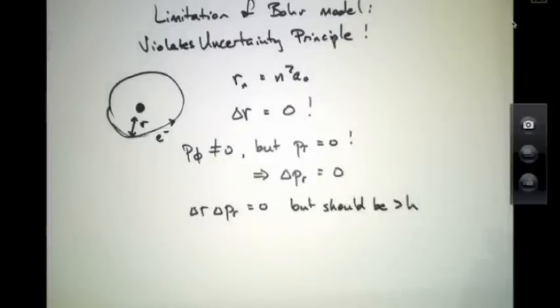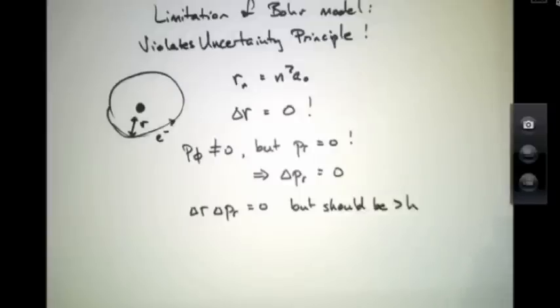Now, it's certainly understandable that Bohr would not have noticed this, because the Bohr model preceded Heisenberg's uncertainty principle by nearly a decade. And as a result, he would not have known this. But when the uncertainty principle came about, it was immediately clear that the Bohr model was not a complete description.